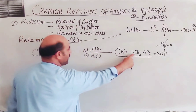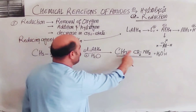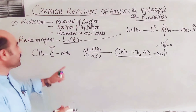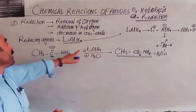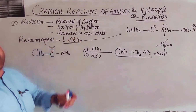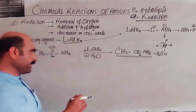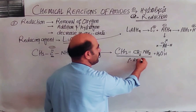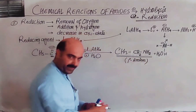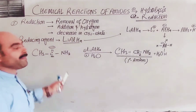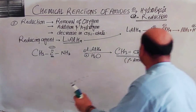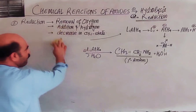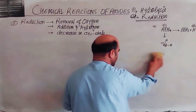In the reduction, oxygen is removed and hydrogen is added. This is the reduction process. The mechanism involves several steps, and the end of the mechanism leads to the amine product.